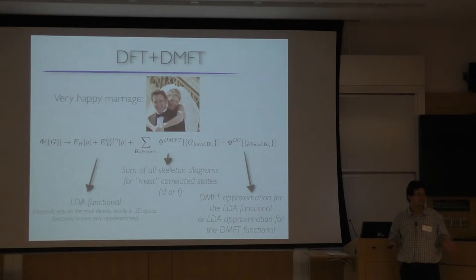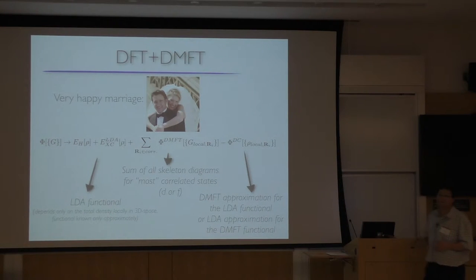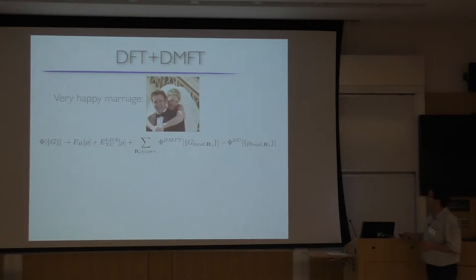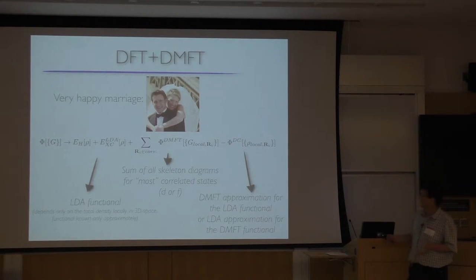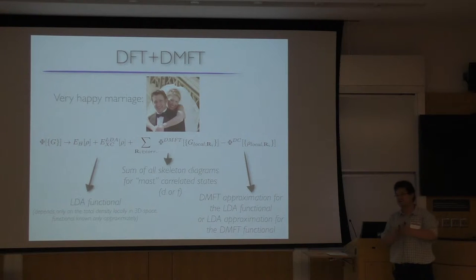Now we come to marry DFT and DMFT together. There are many itinerant states very economically described by DFT or LDA that we don't want to include in the DMFT problem. However, there are some orbitals on some sites R,I which need to be treated better. Those are treated with DMFT — summing all diagrams local to that site — and we need to subtract the double counting, which is the DMFT approximation for the LDA functional, or equivalently the LDA approximation for the DMFT functional. This is why the functional language was useful.